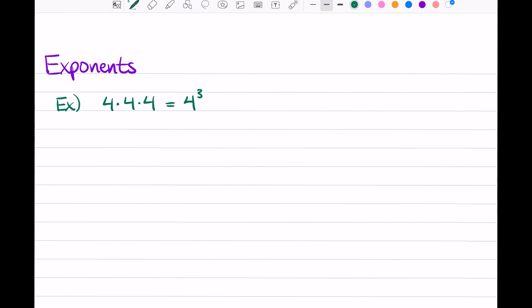So this is just a symbol, a shorthand, for writing a number multiplied a certain number of times. This right here would be called the base, and this is called the exponent. It tells us how many times we multiply a number, and that number is the base.